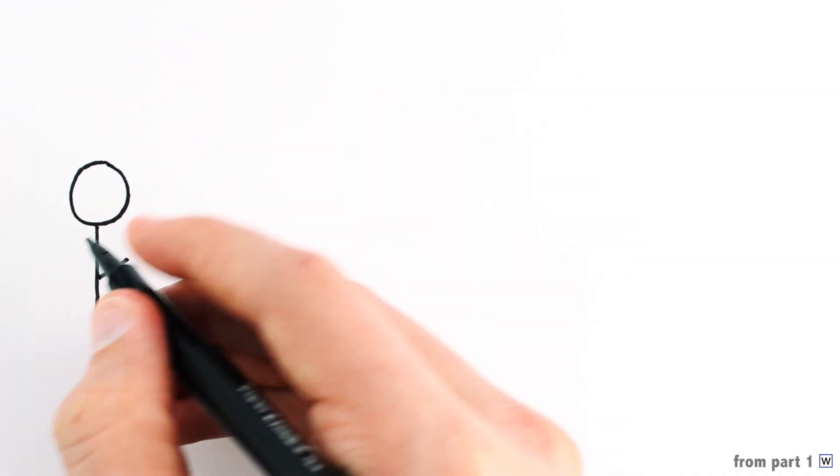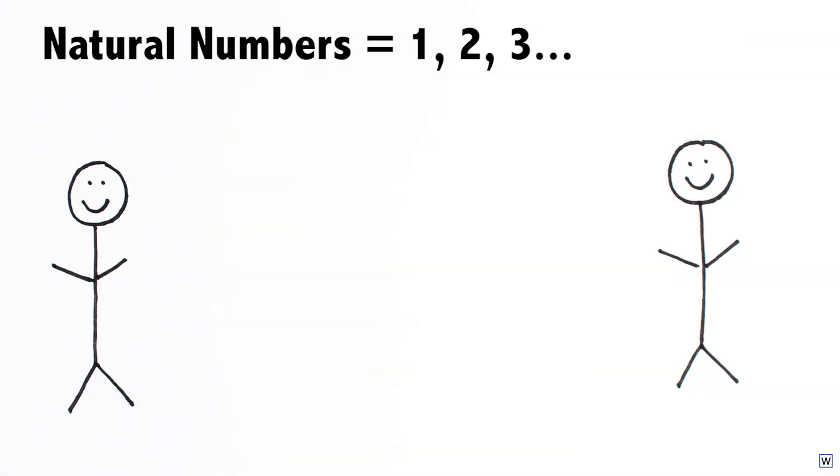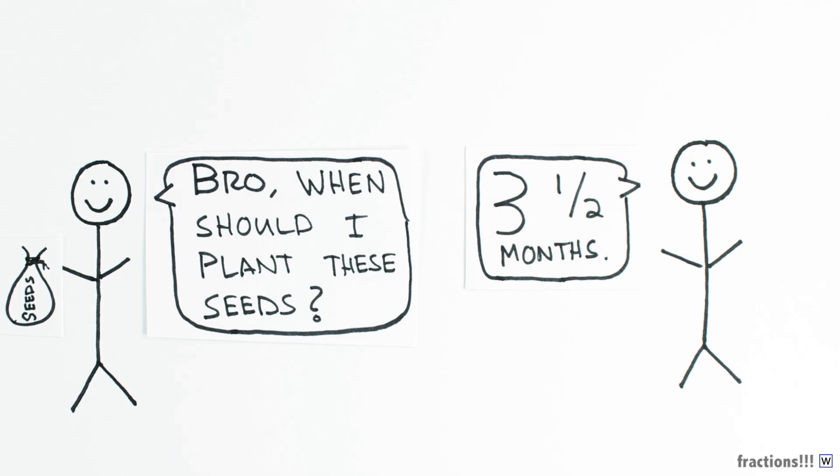Back in Part 1, we saw how the definition of what a number is has evolved over time, beginning with the natural numbers. The Egyptians figured out that these numbers were missing something, and it's pretty obvious today that the natural numbers are incomplete.